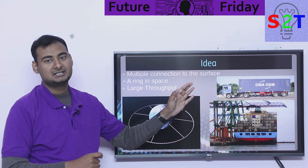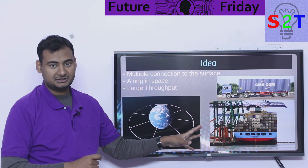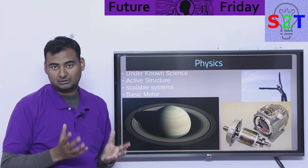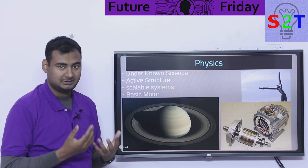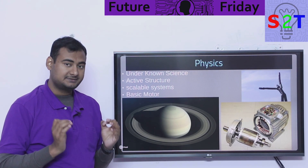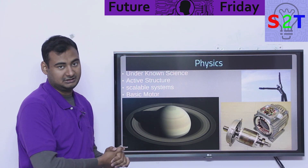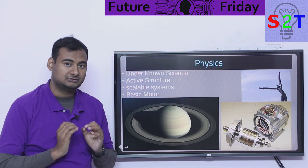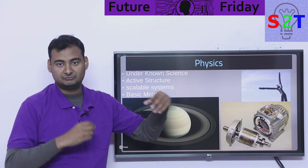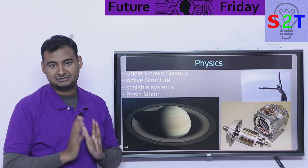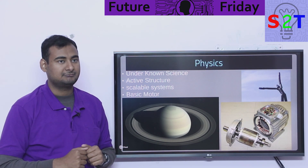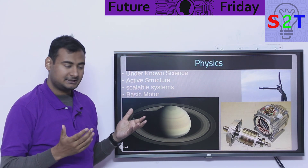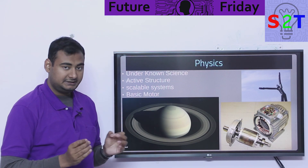The gap between a space elevator's throughput versus an orbital ring's throughput is mind-boggling. Now let's talk about physics — does physics allow it? Short answer: yes, it is possible under known science. You're familiar with Saturn's rings. Now be mindful: I'm describing an active structure. It's like a balloon — it will collapse the moment power goes away. As long as you have power, it's okay.